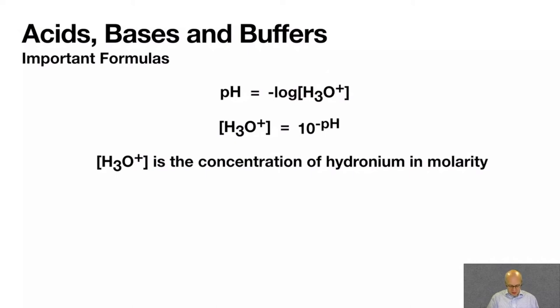Now remember, in the square bracket notation, whatever's inside the square bracket, what this means is it is the concentration of hydronium, which is inside the square bracket, in molarity. Moles per liter. Remember, molarity is moles over liters. That's molarity, right?